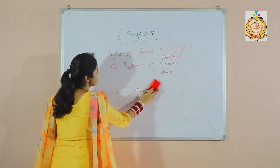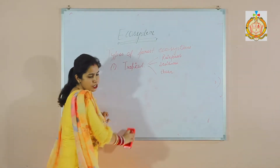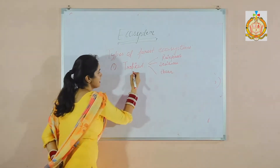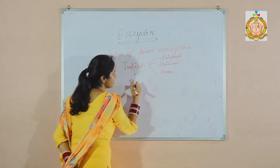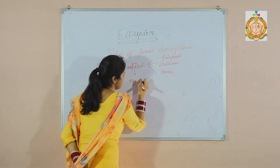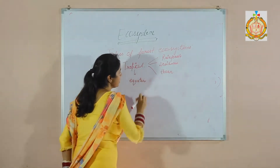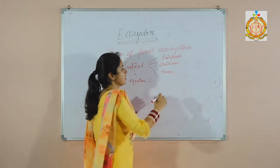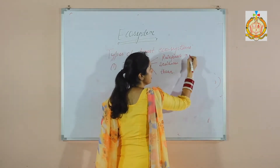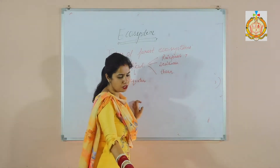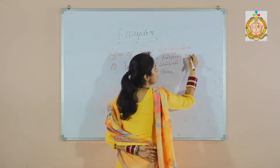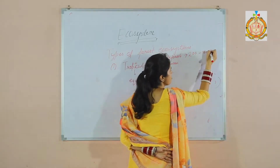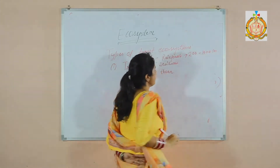Now let's discuss one by one. Tropical forests are present near the equator. They have heavy rainfall, ranging from 200 cm to 1000 cm.